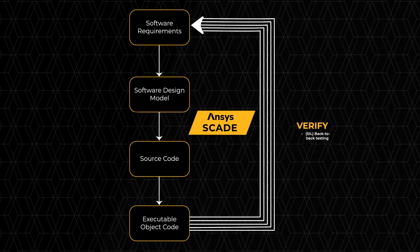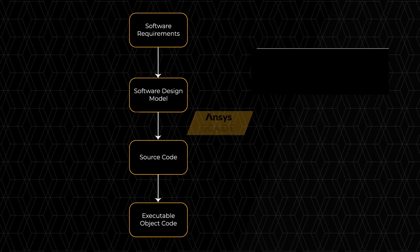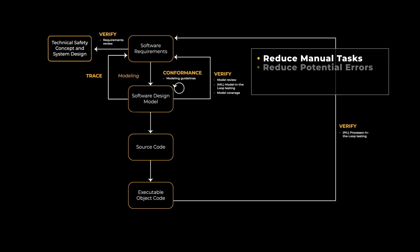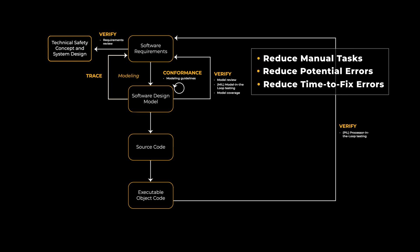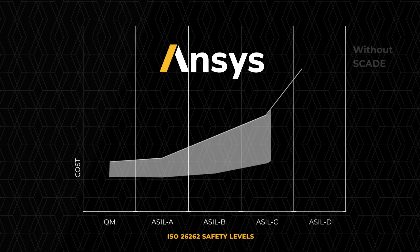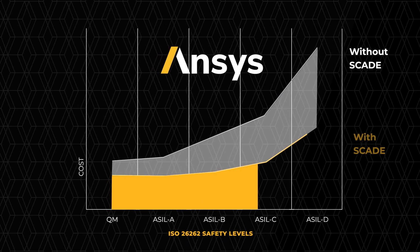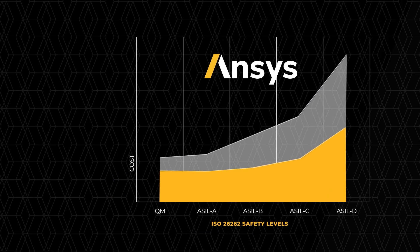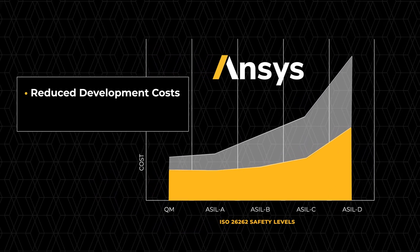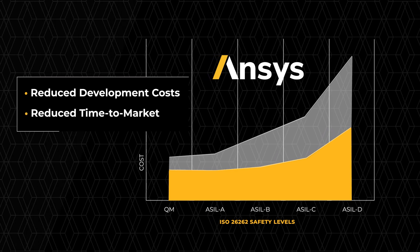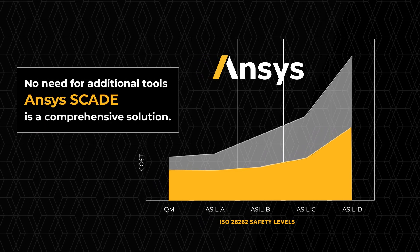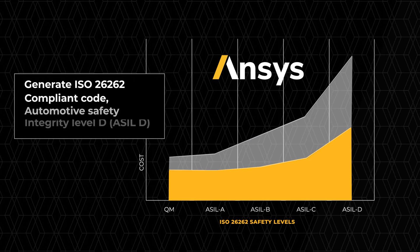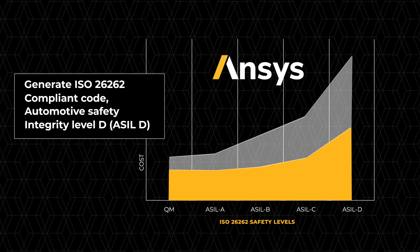Back-to-back testing is no longer needed. This streamlined process from ANSYS eliminates redundant activities, reducing manual tasks and potential errors, along with the added time necessary to fix those errors. Here, you can see the significant cost reductions using SCADE as applied to different automotive safety integrity levels, as defined by ISO 26262. Upon comparison, ANSYS delivers significant savings in both cost and time to market. Our embedded software solution means no need for additional tools because everything is covered by ANSYS SCADE suite. All code generation is ISO 26262 ASIL-D compliant.